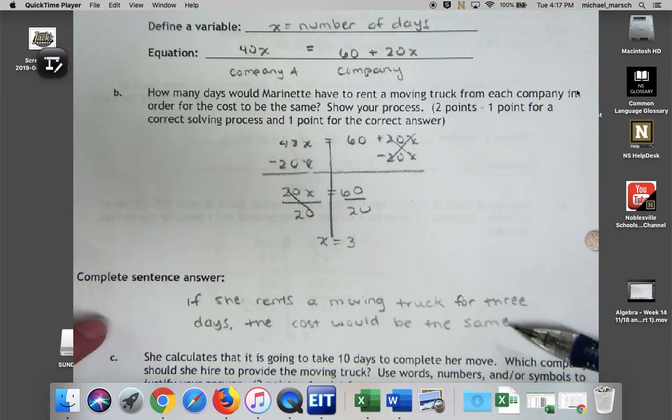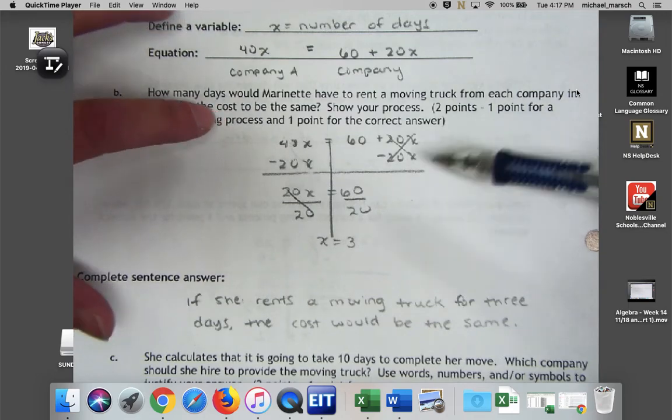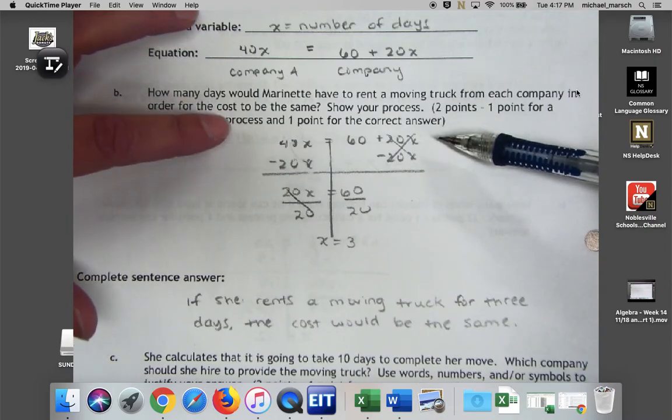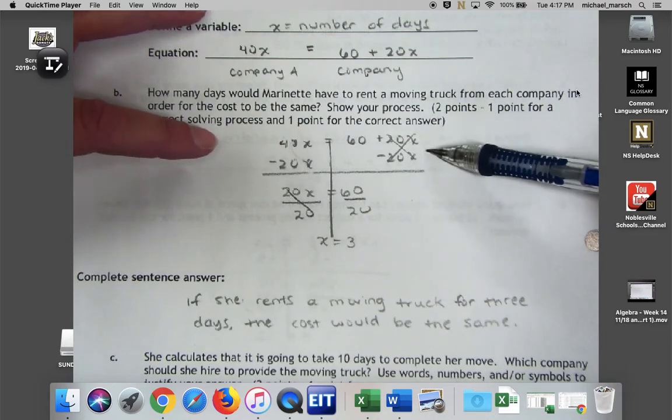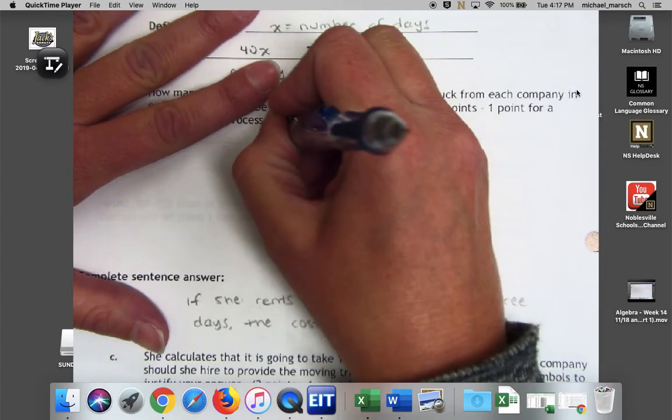Okay, so when we think about that kind of abstractly, after three days, if she's going to rent for more than three days, which company is probably going to be the most, the best deal, right? Well, after three days it costs the same, so then all of a sudden it's paying $20 versus $40 a day.